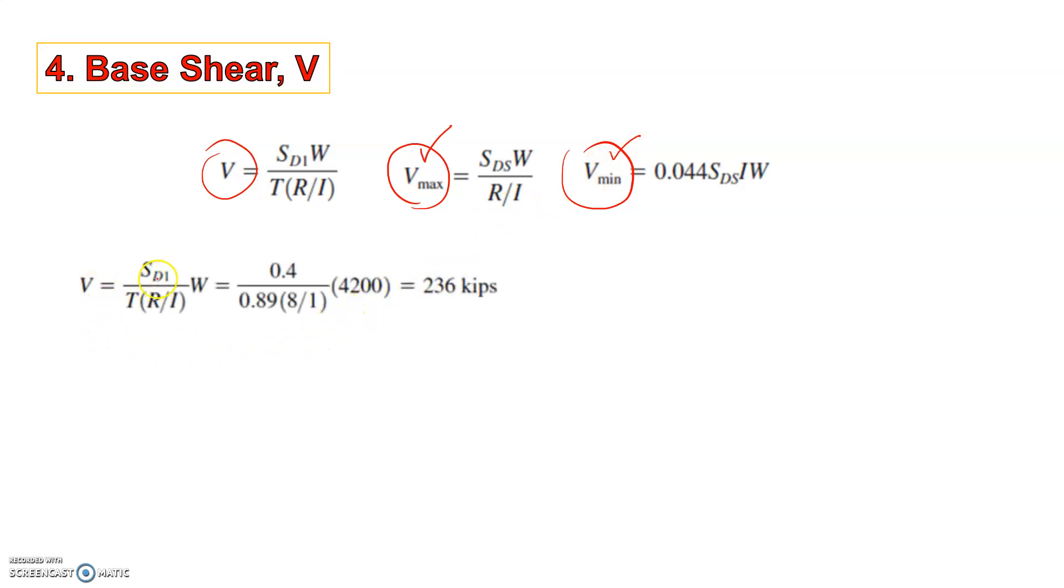V is calculated by this equation. SD1 is given in the question. W has been calculated. Time period was calculated. R and I is known. When we substitute all of these we get the value of V as 236 kips.